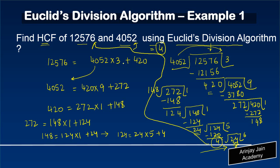Quite a long process — it took a lot of steps — but in the end we have reached the result. That's how you find the HCF of two positive integers using Euclid's division algorithm.